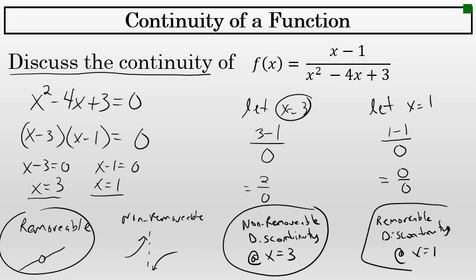So this graph would have two gaps, two places where it's not continuous: a non-removable discontinuity at x = 3 and a removable discontinuity at x = 1.